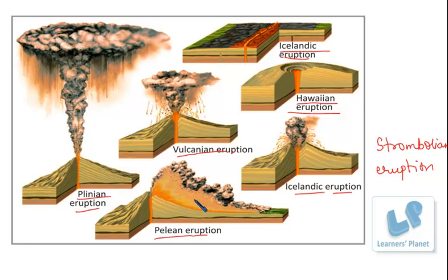The Plinian eruption is also called the Vesuvius eruption. Most volcanic eruptions take place unseen on the ocean floor and are therefore called submarine eruptions. Other types of eruptions include hydrovolcanic eruptions.